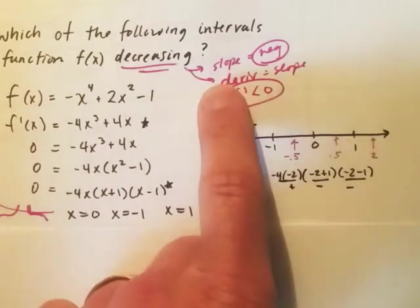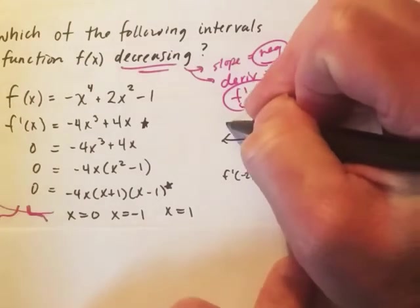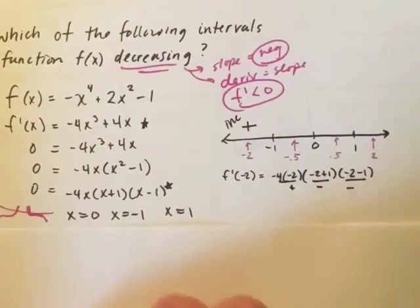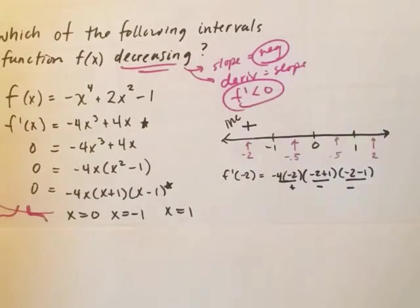So my slope is positive. That tells me that this is going to be increasing. So we know that that can't be an answer. We're just looking for where it's decreasing.